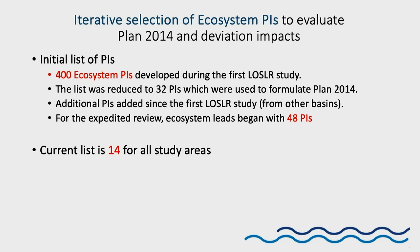Getting closer to these performance indicators: there were initially 400 PIs developed for Plan 2014, which was reduced to 32 used to formulate the plan. Additional PIs were added since, and when I joined the ecosystem technical team, we had 48 PIs that we winnowed down to something more manageable. We currently have a list of 14 for all study areas, and I'll show you the ones for the upper St. Lawrence.